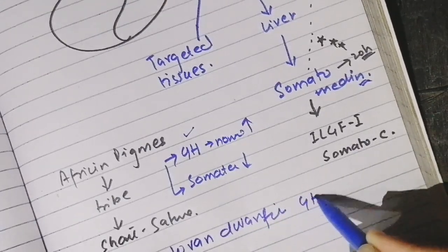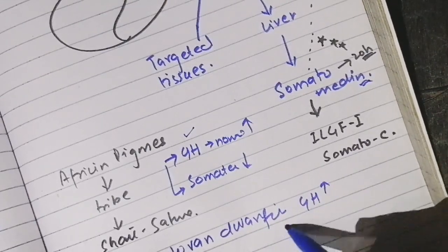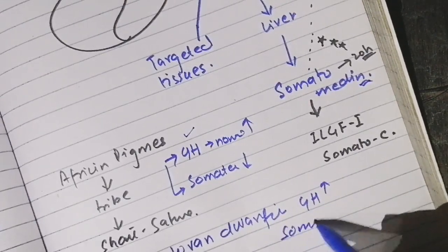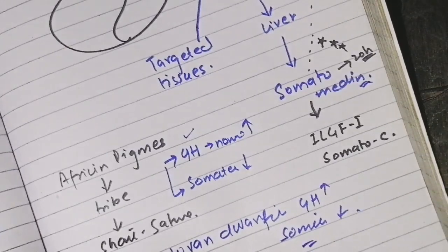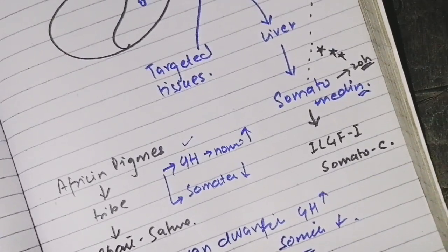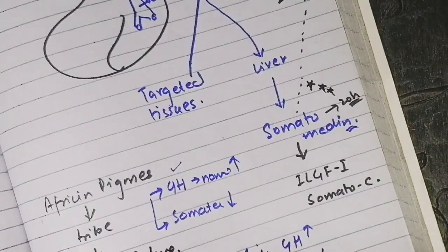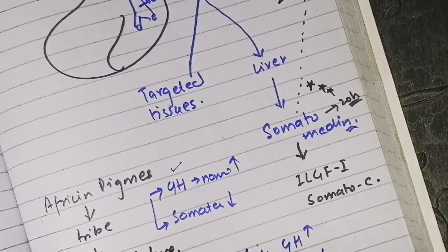Another clinical example is Levi-Lorain dwarfism, in which growth hormones are also normal but somatomedin levels are low. So we know that somatomedins are very important for growth hormone normal functioning — if somatomedins are low, growth hormone will not work properly.